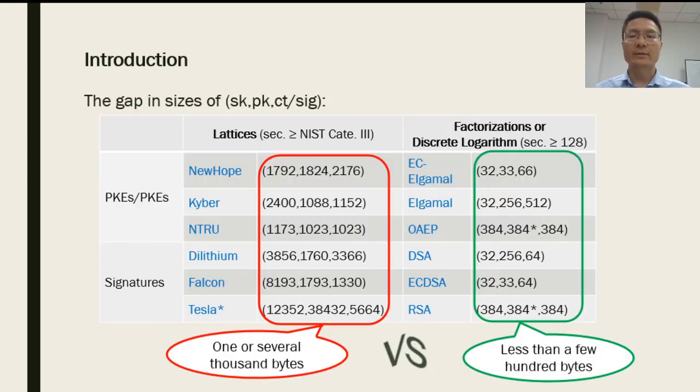The last decade has witnessed great development on lattice-based schemes, but they are still less efficient than their number theoretical counterparts in terms of public key, ciphertext, or signature size. In particular, for adequate security, lattice-based schemes typically need thousands of bytes, but the latter only requires at most a few hundred bytes. Reducing the size has become one of the main problems in constructing practical lattice-based schemes.